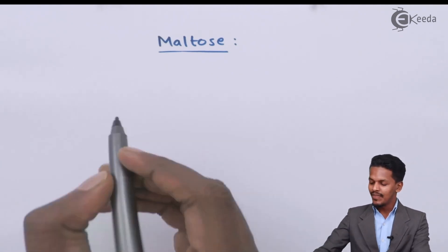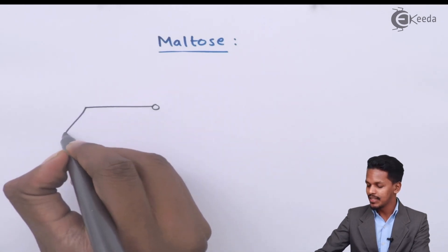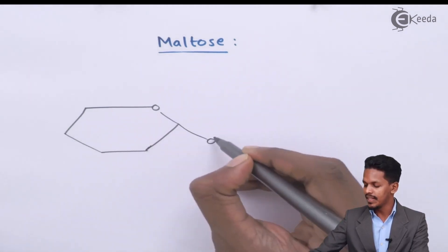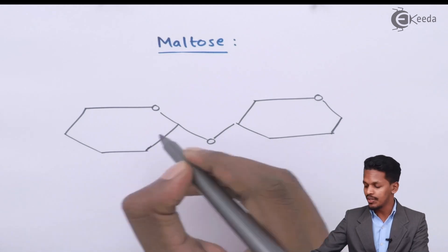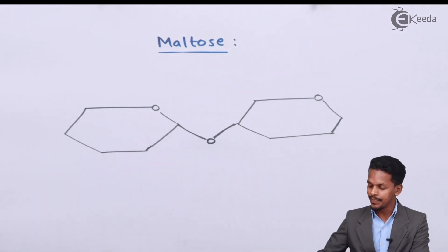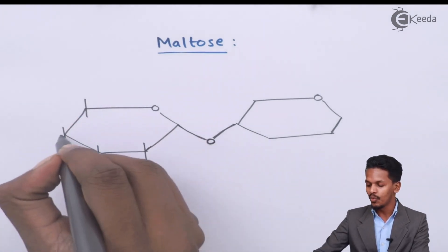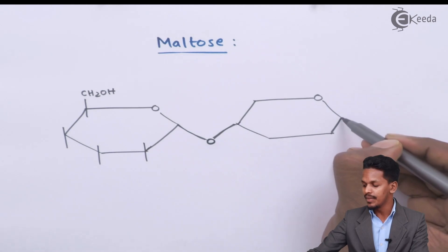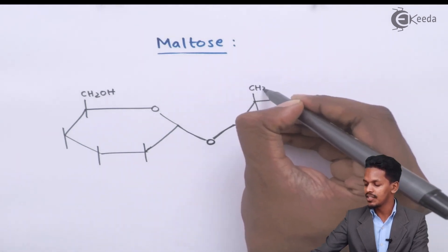The structure of maltose involves combining two alpha-D-glucopyranose units. For the first unit, we label the carbons: carbon number one, two, three, four, five, and carbon number six, which carries CH₂OH. For the second unit, the same numbering applies: carbon one, two, three, four, five, and carbon six, which is also CH₂OH.